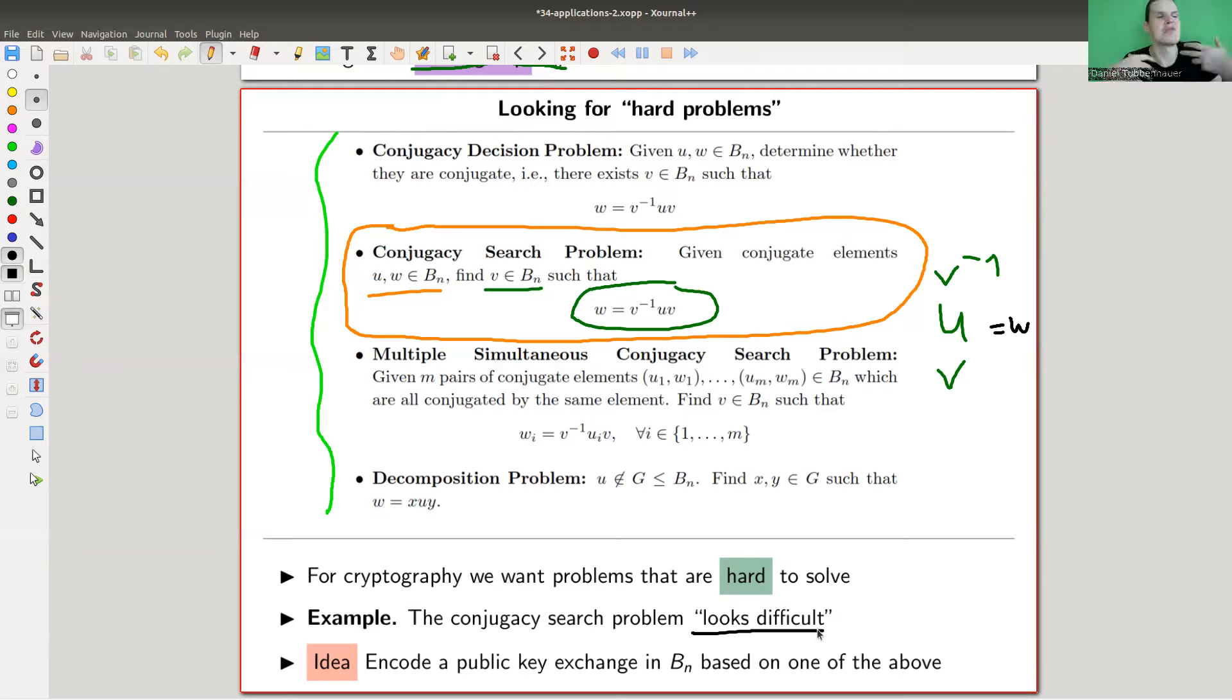Conjugate just means you have a V and the V inverse, and you put U between V and V inverse. Just from the outset, it looks pretty difficult. Turns out that you can do it. But for now, it just looks really difficult. And it was really not obvious that it's actually not difficult in a certain way. So you might want to use it in some form of protocol involved in cybersecurity, because it's really hard to find those elements.